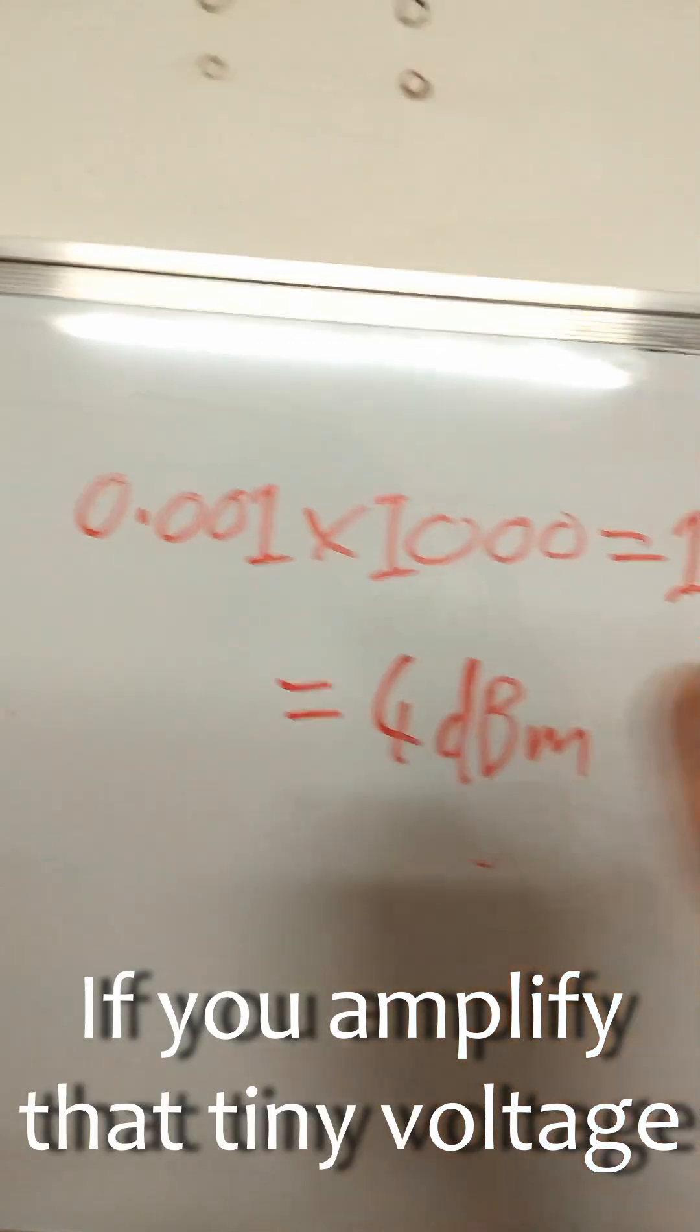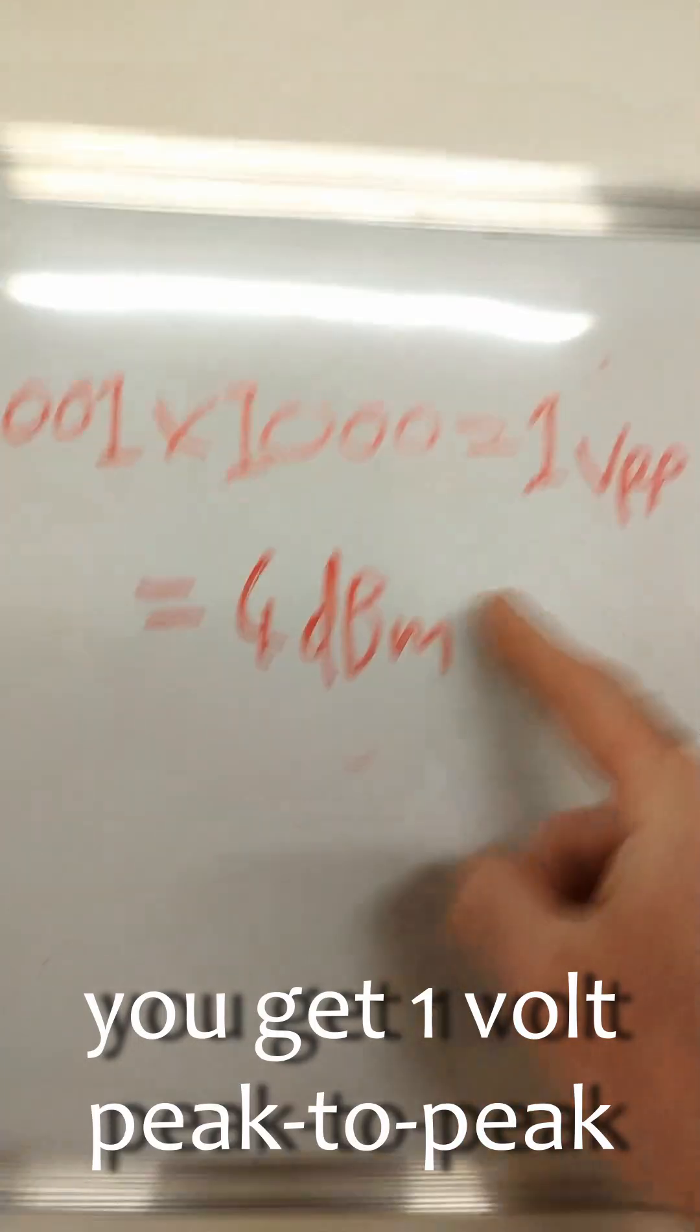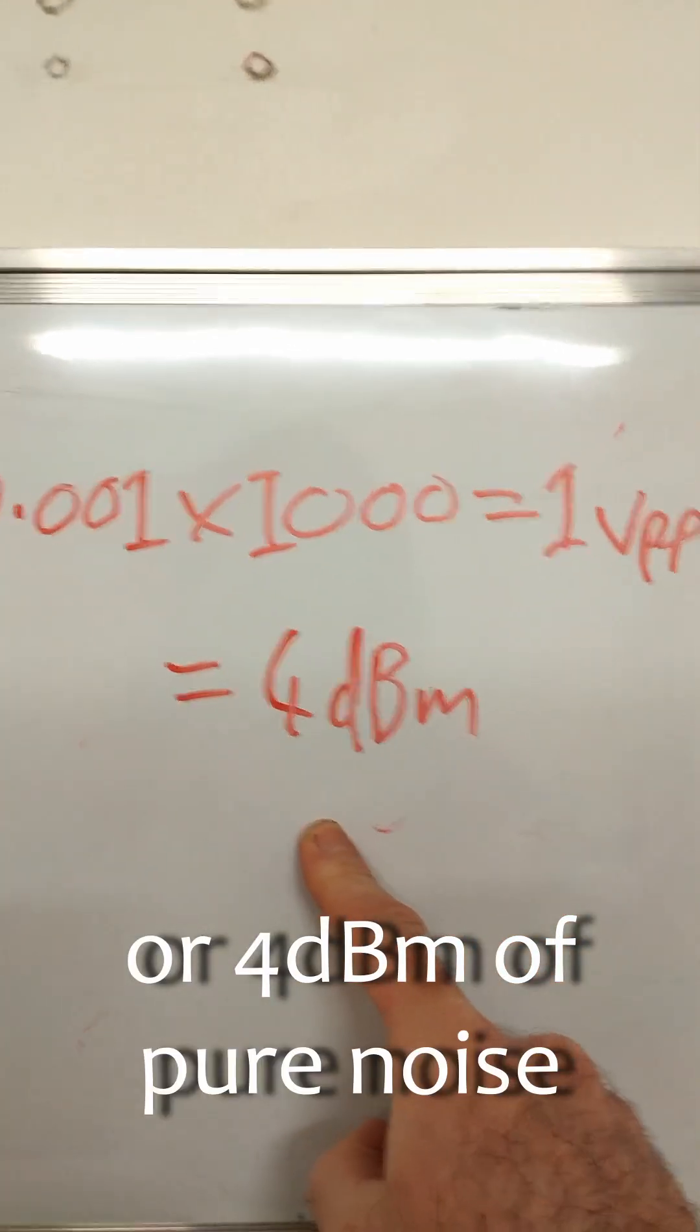If you amplify that tiny voltage by the massive gain in your distortion pedal, you get one volt peak to peak or four dBm of pure noise going into your signal.